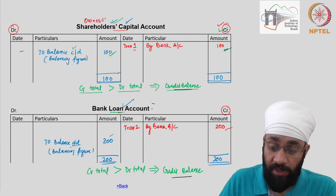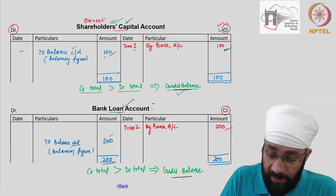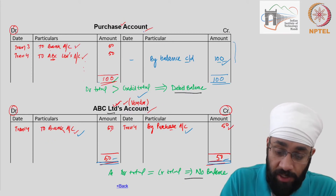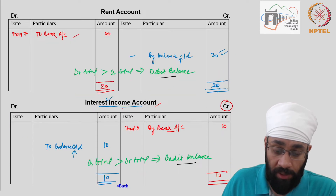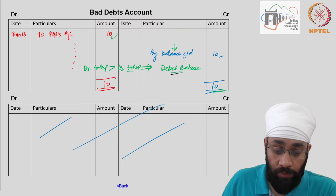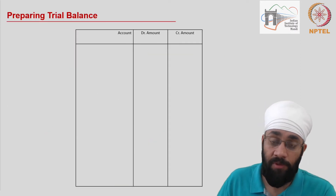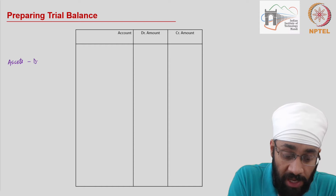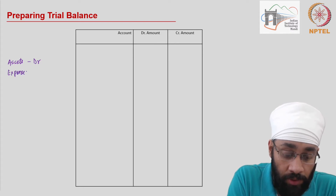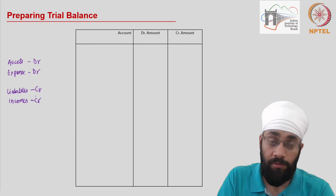Likewise, we have all the balances here: shareholders capital account has a credit balance of 100, bank loan account has a credit balance of 200, purchase account has a debit balance of 100, and so on. In the ledger posting videos we also discussed that some accounts are going to have a debit balance and some a credit balance. The rules are: all assets and all expenses are going to have a debit balance; on the other hand, all liabilities and all incomes are going to have a credit balance.